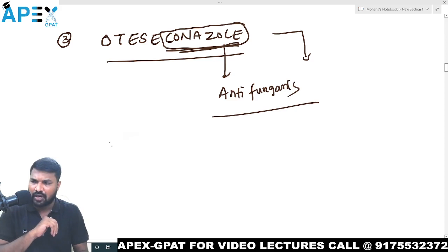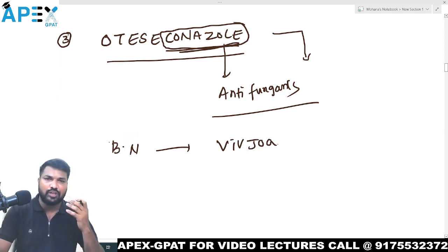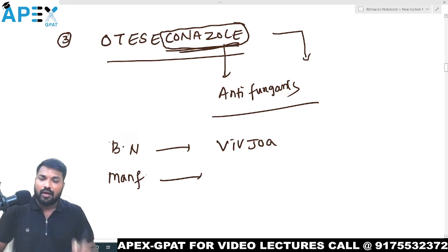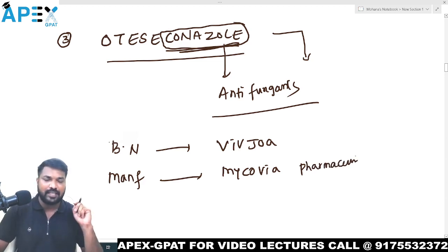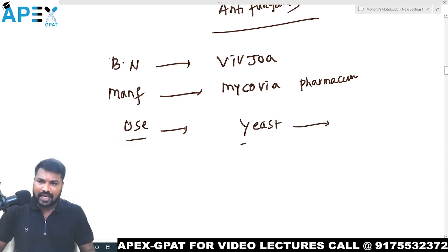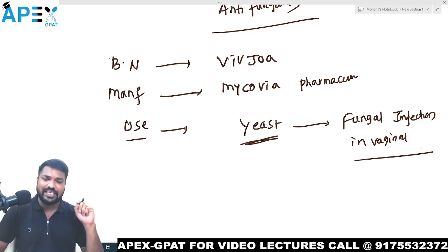The brand name of Oteseconazole is Vivjoa. The manufacturer is Mycovia Pharmaceuticals. The use of Oteseconazole: if yeast causes a fungal infection in the vagina, for this treatment we use Oteseconazole — vaginal yeast infection.